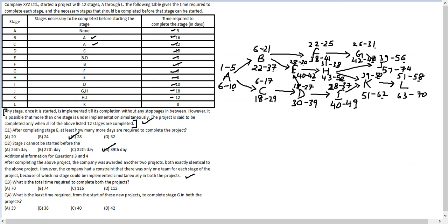The numbers above each stage refer to project 1 timings and the numbers below refer to project 2 timings. For question 3 — the total time to complete both projects — the answer is 74, option B. For question 4 — the least time from the start to complete stage G in both projects — that is day 47.